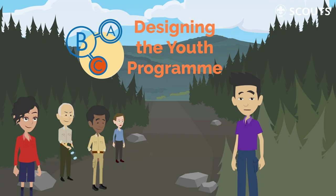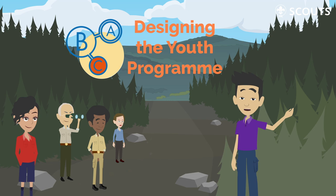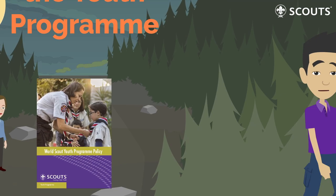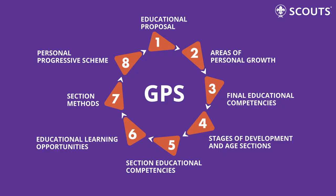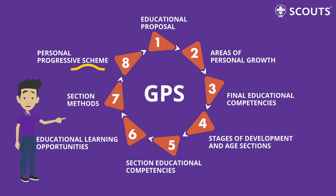Step number three is designing the youth program. This is where you get to design your youth program and align it with the World Scout Youth Program Policy. In the heart of the GPS, you'll find the eight steps methodology, where you can find guidance on how to write an educational proposal, setting up the final educational competencies, or defining the personal progressive scheme for each age section. You will need all these components to have a well-rounded program.